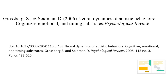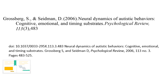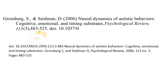Then come the volume and issue. So 113, which is the volume number, is italicized. And 3, which is the issue number, comes right after in parentheses and is not italicized. Then comes a comma followed by the page range. And finally, the DOI.